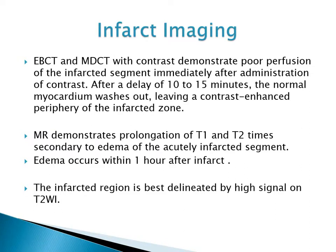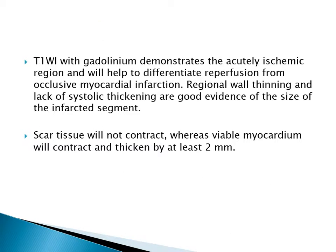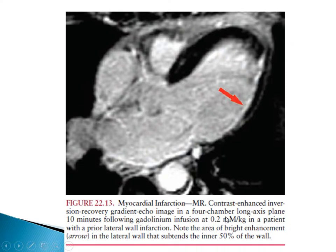Regarding MRI, it demonstrates prolongation of T1 and T2 times secondary to edema of the acutely infarcted segment. The infarcted area is best delineated by high signal on T2-weighted images. T1-weighted images with gadolinium demonstrate the acutely ischemic region and help differentiate reperfusion from occlusive myocardial infarction. Lack of systolic thickening is good evidence of the infarcted segment's size — scar tissue will not contract, whereas viable myocardium will contract and thicken by at least 2 mm. This MRI contrast-enhanced image shows bright enhancement in the lateral wall, indicating infarction.